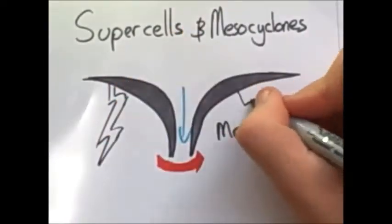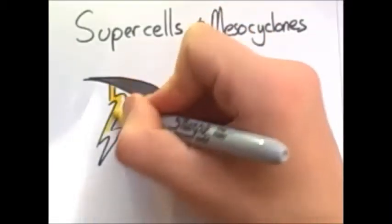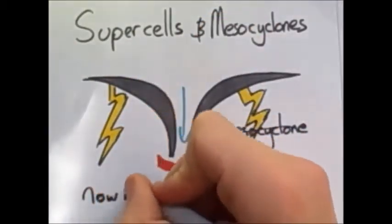It starts off as a single cell, then a multi-cell, and then scales up to supercell. They are often isolated and can dominate the local climate up to 20 miles away.